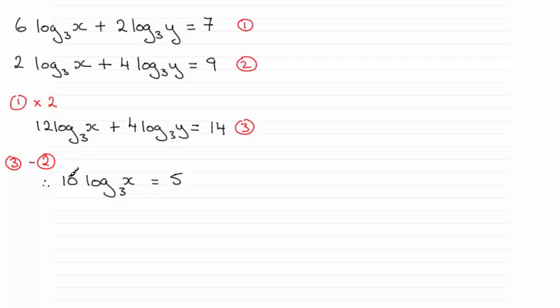And then if I divide both sides by 10, I end up with the log of x in base 3 equals 5 divided by 10, which is a half. And then I can anti-log this, get rid of the log, and that means that x equals the base, which is 3 to the power 1 half. Or 3 to the power 1 half is the square root of 3.